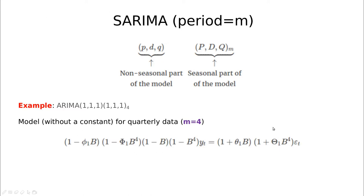Mathematically, we can use the shift operator B in order to do this. Remember that the one is the derivative part. Here it means we are taking the first derivative for the regular part and the first derivative for the seasonal part. This four is the power of B — and this is different if we put the four outside the bracket, which would mean taking the fourth derivative. So this is the first derivative using lag equals four.